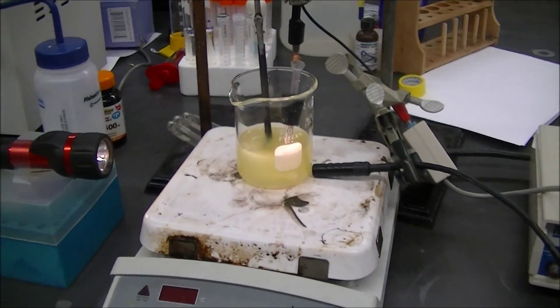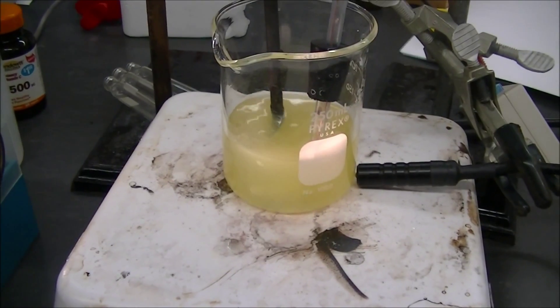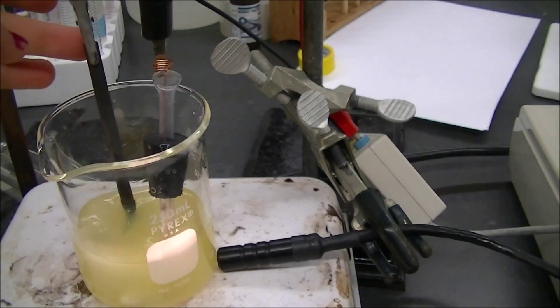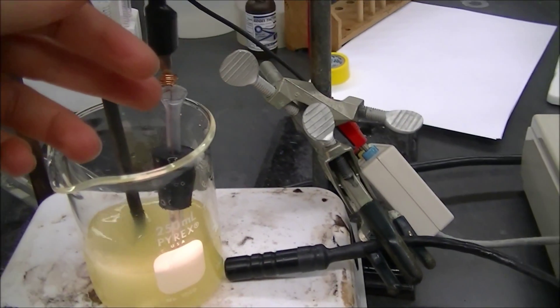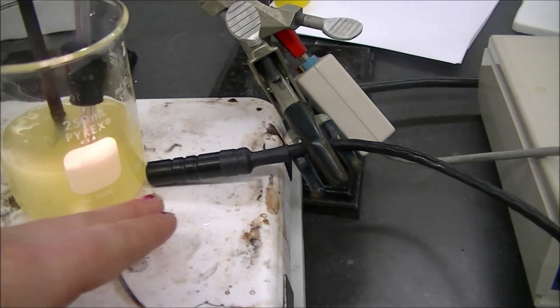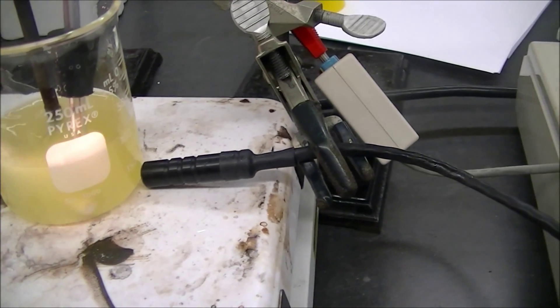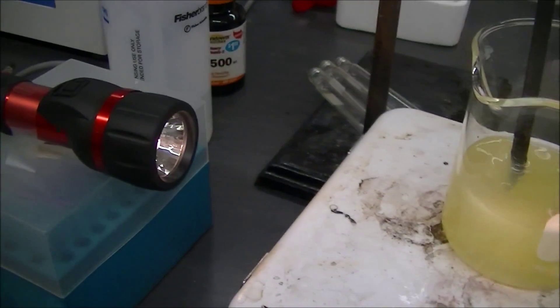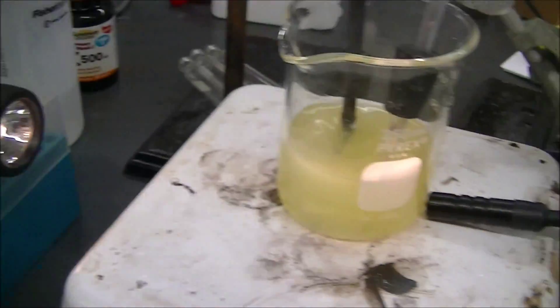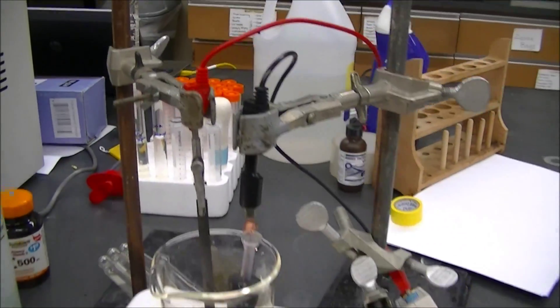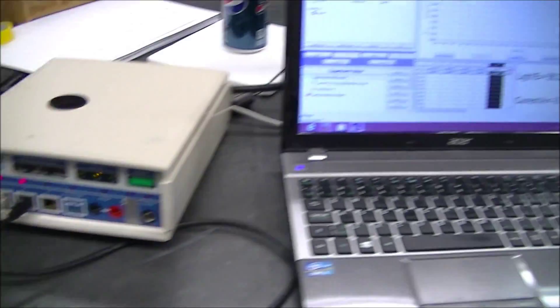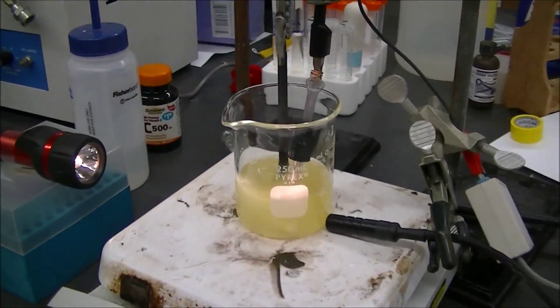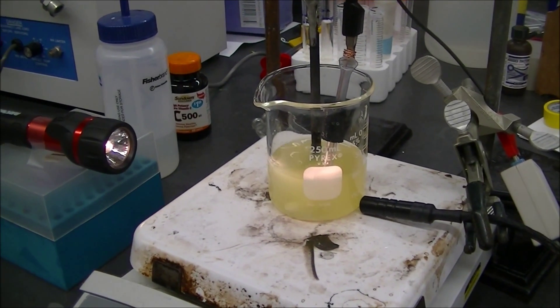So here's our setup. We have our solution right here, you can see it's spinning. Then we have our carbon electrode here and our platinum electrode here. Then we have our photo sensor, you can see it's touching right up against the glass so there's no extra light coming in. Then we have our flashlight over here shining on it. It looks very nice and all set up, hooked through Microlab to the computer.